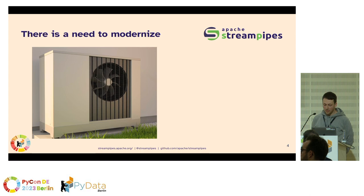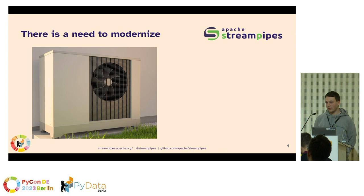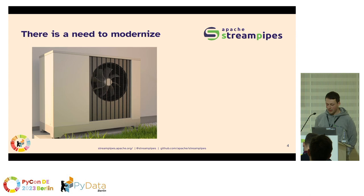One technology that is recently very widely and actively discussed is the heat pump. That's probably one way people can modernize their energy production in the upcoming years. What's also changed is the willingness to measure one's energy consumption and have more insights into how we consume energy efficiently. These were also some thoughts that Sven and his family had, and they invested in such a heat pump. They were interested in how this heat pump actually performs and when it's most efficient.